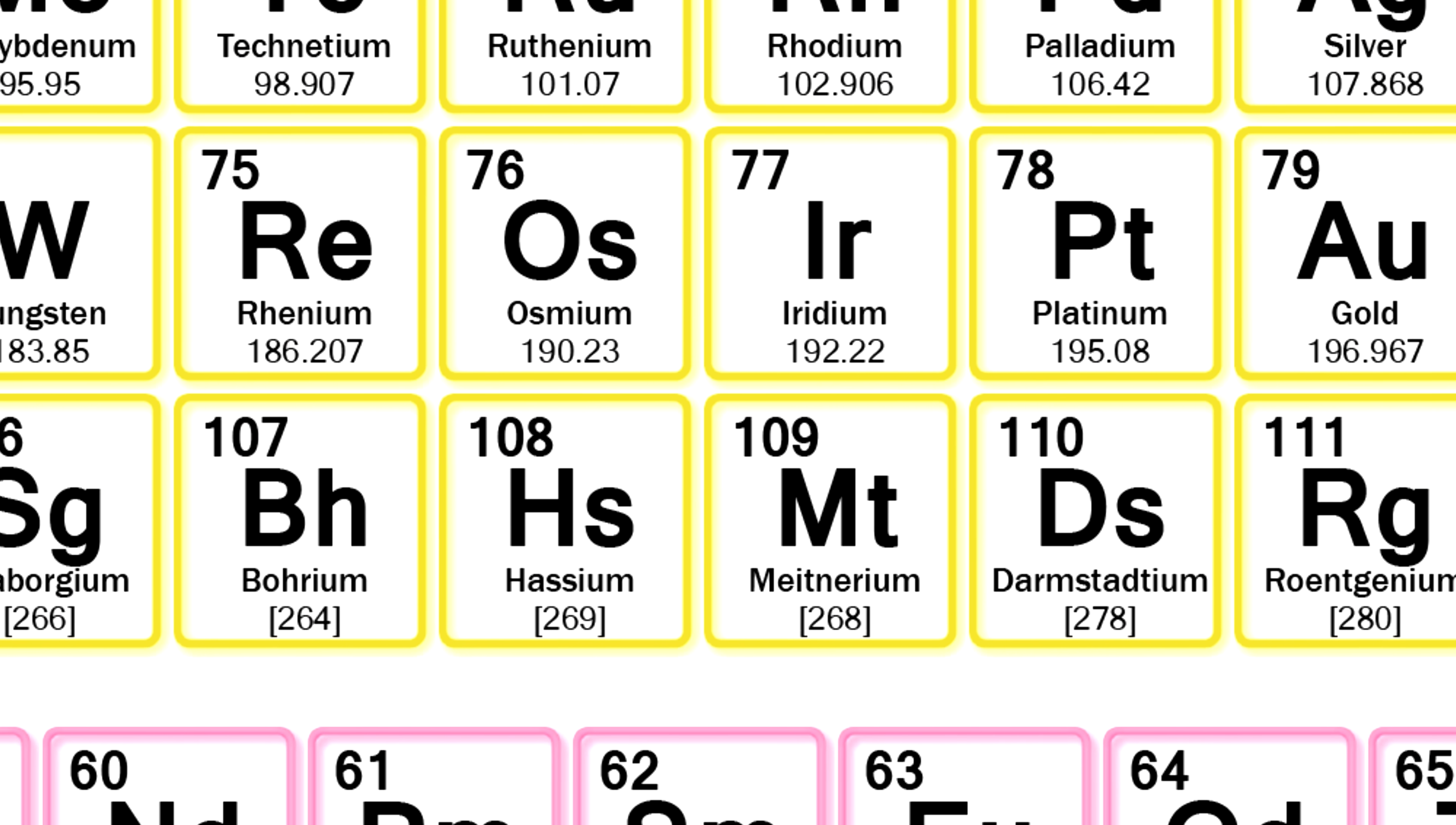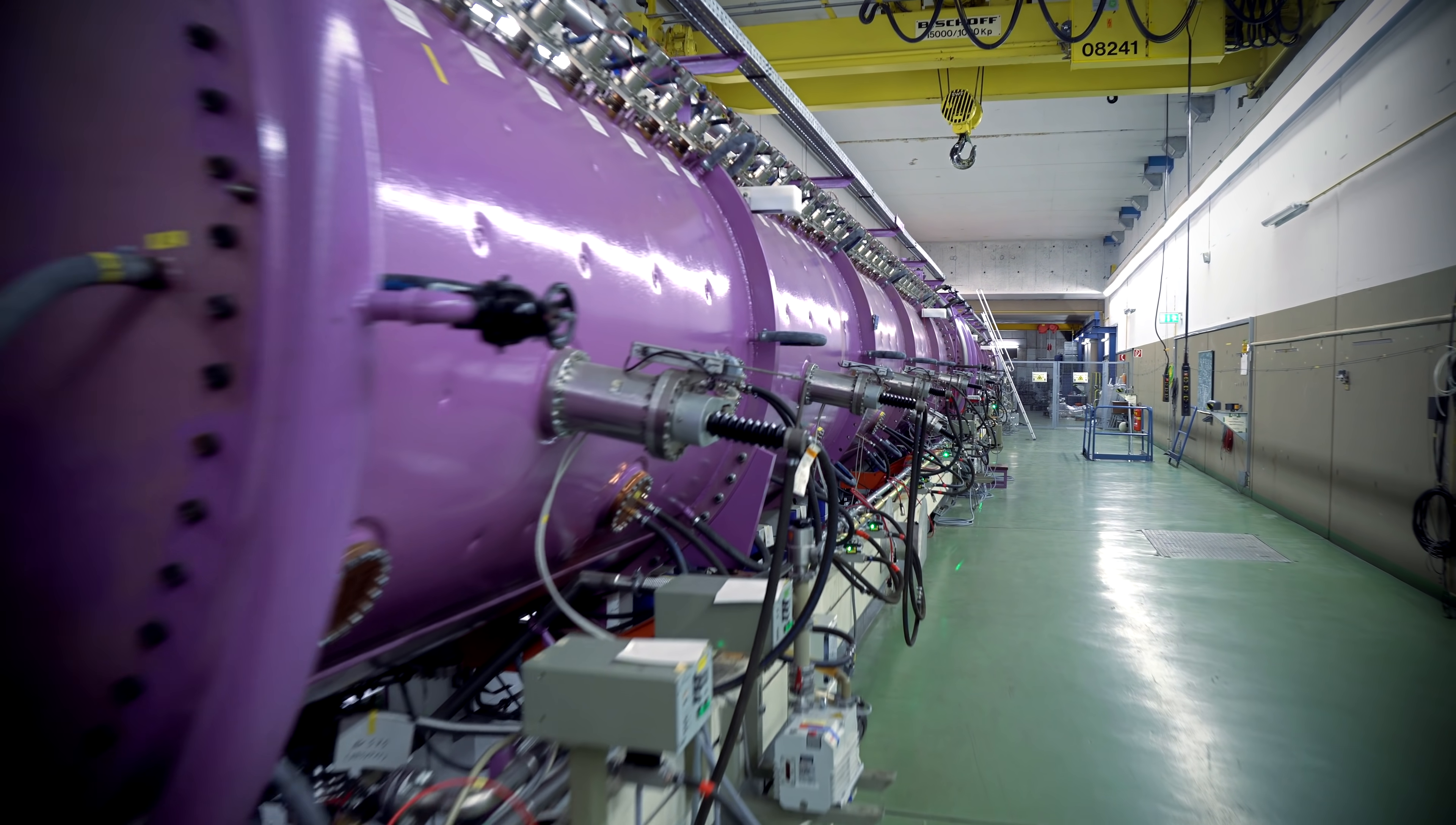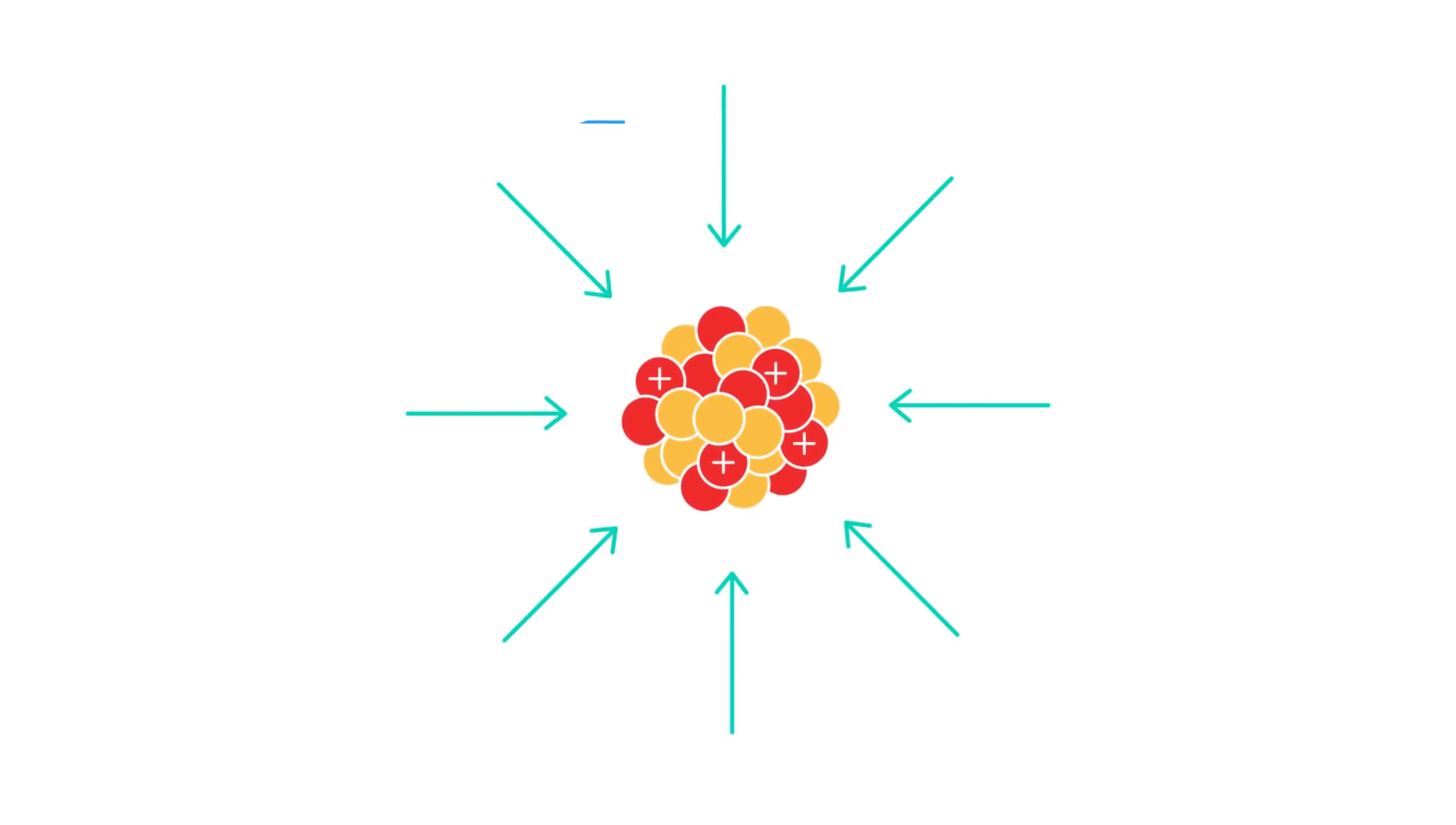However, as the atomic number and mass of the new element grow, it gets harder to run a nuclear fusion with it, because nuclear strong force holding protons and neutrons together weakens, and as a result, coulomb-repelling force grows.